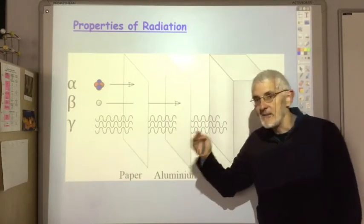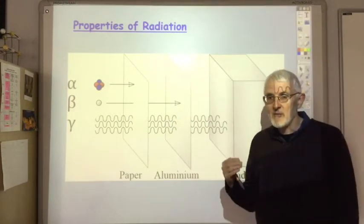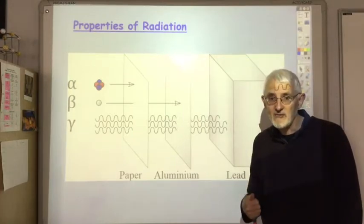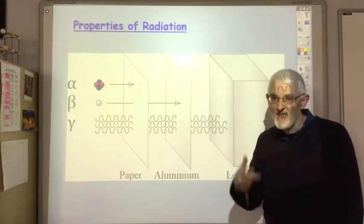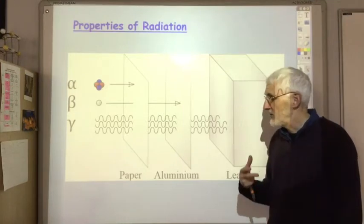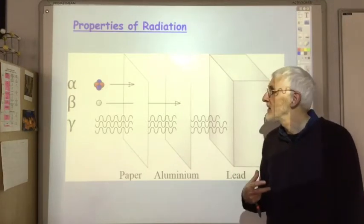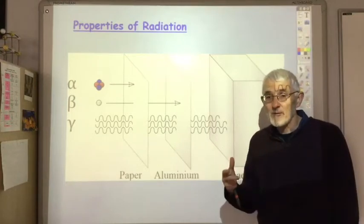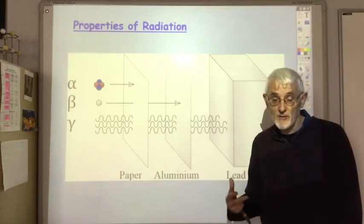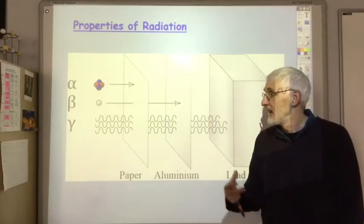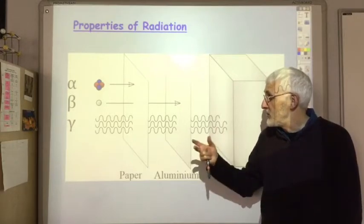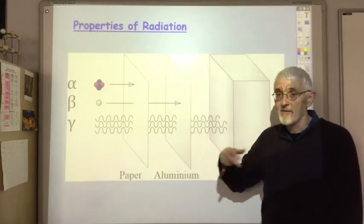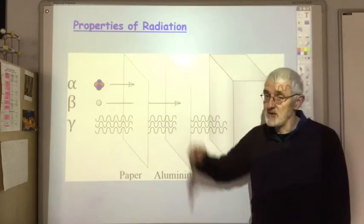The different penetrating powers of the different types of radiation are important — firstly from a radiation protection viewpoint, so if you're having to work with these radioisotopes, you know how to minimise the exposure you receive. They're also important for looking at the uses of radioisotopes — sometimes you want to use a radioisotope that gives off gamma rays with high penetration, and sometimes you don't.